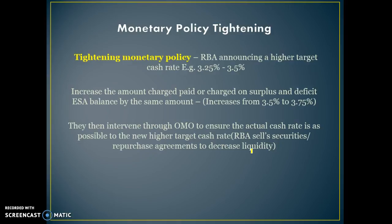For example, the amount charged would increase from 3.5% to 3.75% and the amount the banks receive would increase from 3% to 3.25%. They then intervene through open market operations to ensure the actual cash rate is as close as possible to the target cash rate by selling securities to ensure banks have less liquidity.